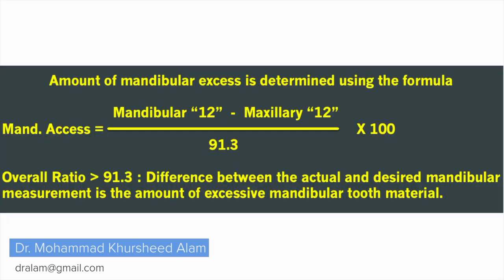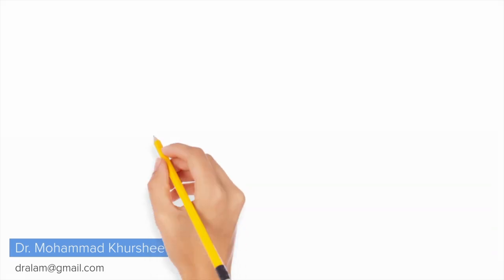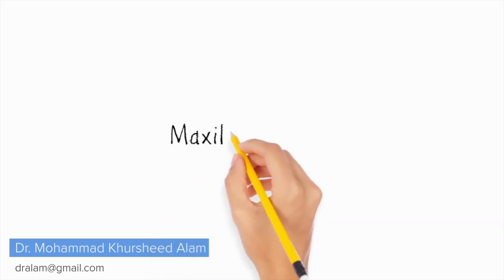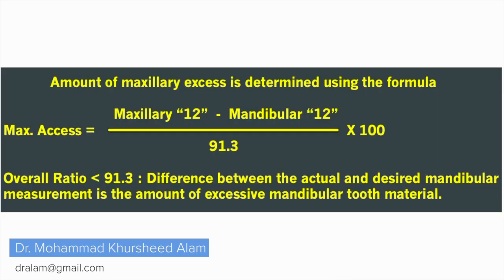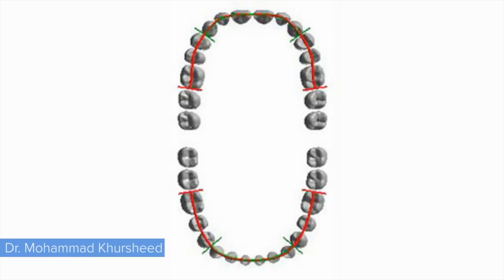An overall ratio of more than 91.3 means the difference between the actual and desired mandibular measurement is the amount of excessive mandibular tooth material. If less than 91.3, the difference between the actual and desired mandibular measurement is the amount of excessive maxillary tooth material.